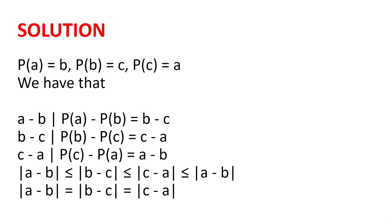So, we have that (a - b) divides p(a) - p(b), which equals b - c. Similarly, (b - c) divides p(b) - p(c), which equals c - a, and (c - a) divides p(c) - p(a), which equals a - b. Now, if one integer divides another, then the absolute value of that integer must be less than or equal to the absolute value of the thing it's dividing. So |a - b| ≤ |b - c| ≤ |c - a| ≤ |a - b|.